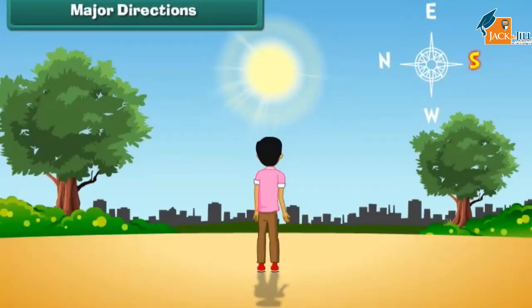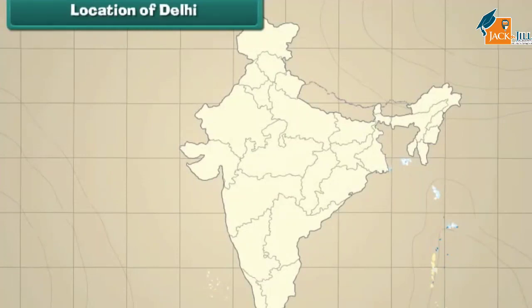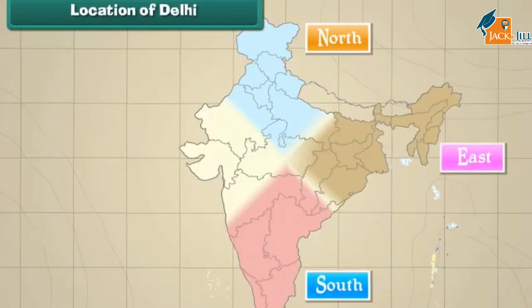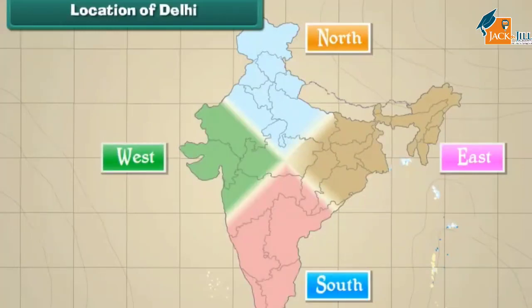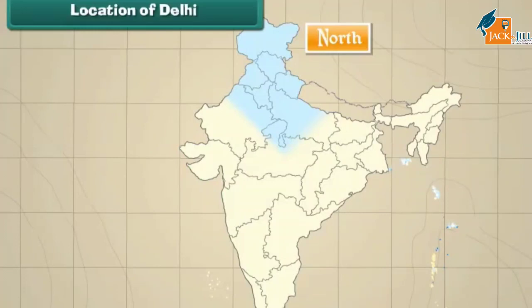This is the map of India. The four major directions — North, East, South, and West — are marked on the map. Delhi is the capital of India. It is located in the north of India.